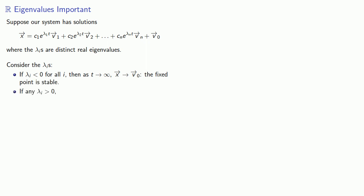On the other hand, if any of these eigenvalues is greater than zero, then as t goes to infinity, the corresponding exponential component will also go to infinity. And so x will go to infinity, and the fixed point is unstable.